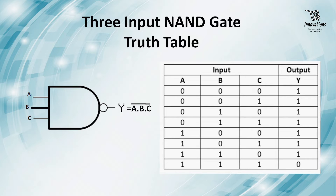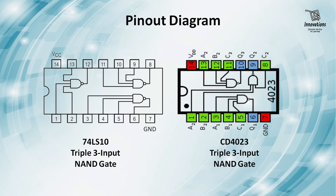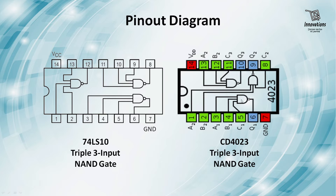Now we will see the pinout diagram of the ICs we are going to test. At the left side, here is the pinout diagram of 74LS10 IC (or 7410 IC), and at the right side there is a pinout diagram for CD4023 IC. Both of these are triple three input NAND gates, so in each of the ICs there are three NAND gates each having three inputs. This is segment 1, this is segment 2, and this is segment 3 for the first IC.